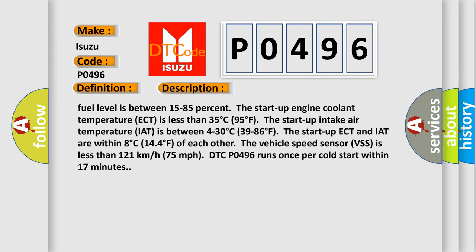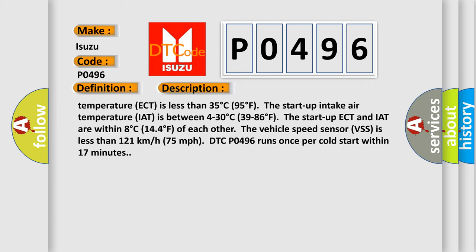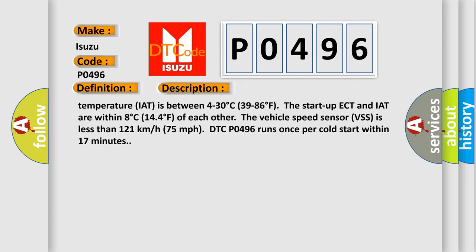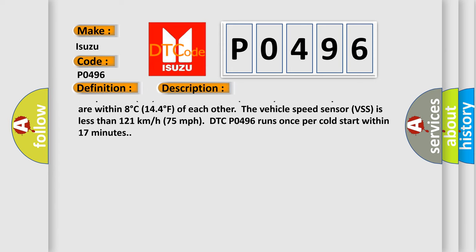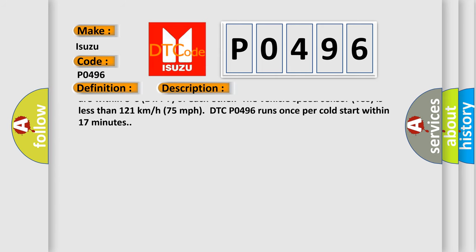The ignition voltage is between 11 to 18 volts. The barometric pressure is more than 74 kilopascals. The fuel level is between 15 to 85 percent.